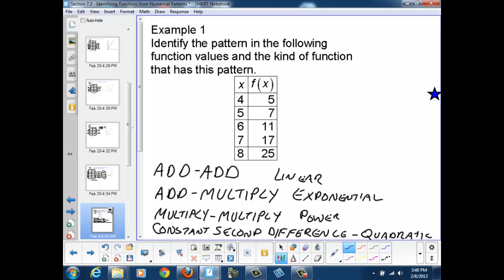So let's see if we can determine if any of these patterns apply to this table of function values. First of all, if it's add-add, then we would determine how much are we adding to x to get our next value in the table. So here, it's pretty obvious, we are adding 1. Now we'll see if we can determine a consistent y pattern through addition. To get from 5 to 7, we'd add 2. To get from 7 to 11, we'd add 4. So we're not adding the same value for y when we add the same value for x. Therefore, add-add and linear don't apply to this example.